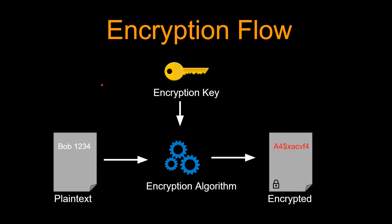Let's start from the beginning. So you have this super sensitive file which has people's names and credit card data and you want to store it in some AWS storage, for example S3. Let's look at the high level flow of encryption. So you have this plain text data and you have this key. Using this key, you run some kind of encryption algorithm and you encrypt the data.